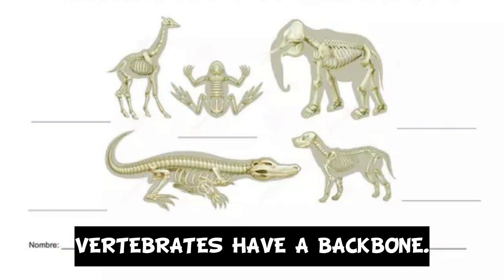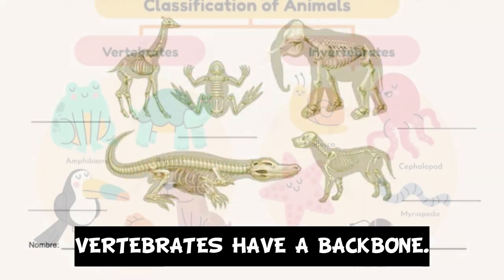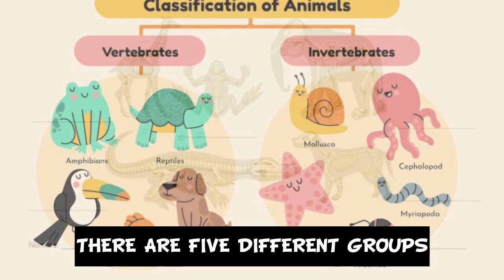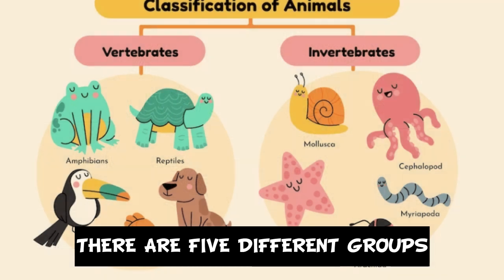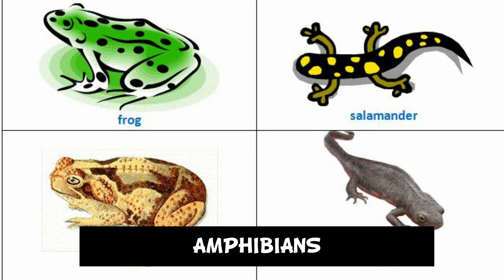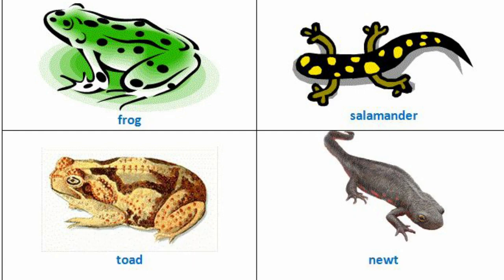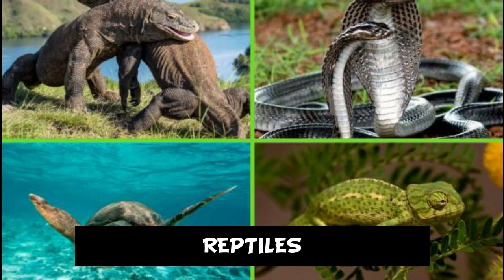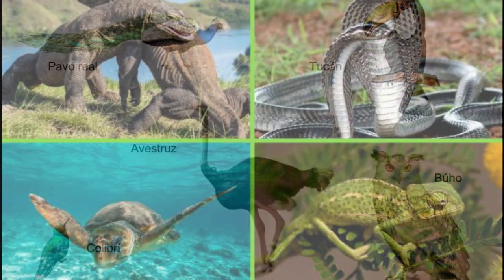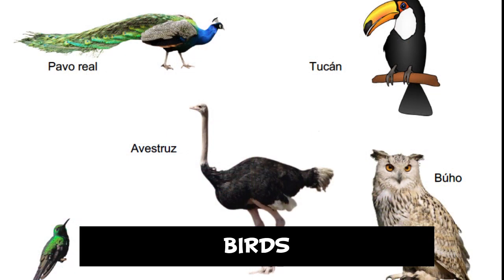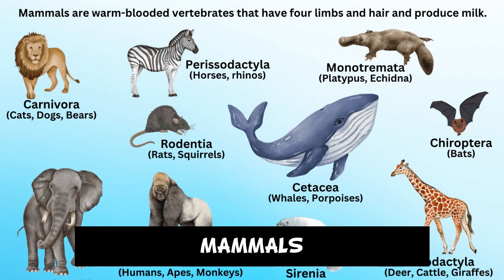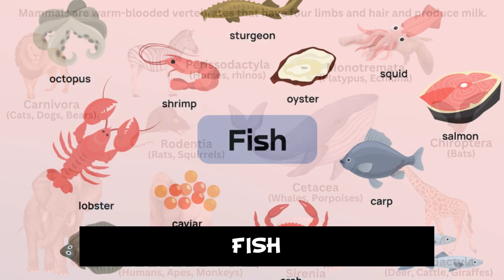Vertebrates have a backbone. There are five different groups: amphibians, reptiles, birds, mammals, and fish.